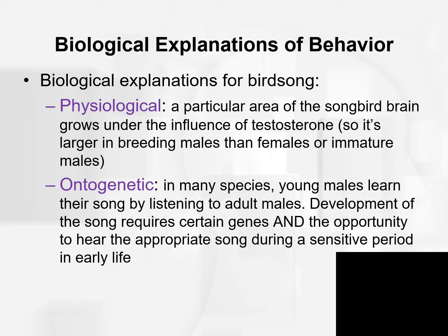An example of an ontogenetic explanation for birdsong: in many species, young males learn their song by listening to adult males. Development of the song requires certain genes and the opportunity to hear the appropriate song during a sensitive period in early life. We will talk about these sensitive periods and critical periods during neural development. Once we add environmental experience to physiological explanations, we're getting into a more holistic, ontogenetic explanation.